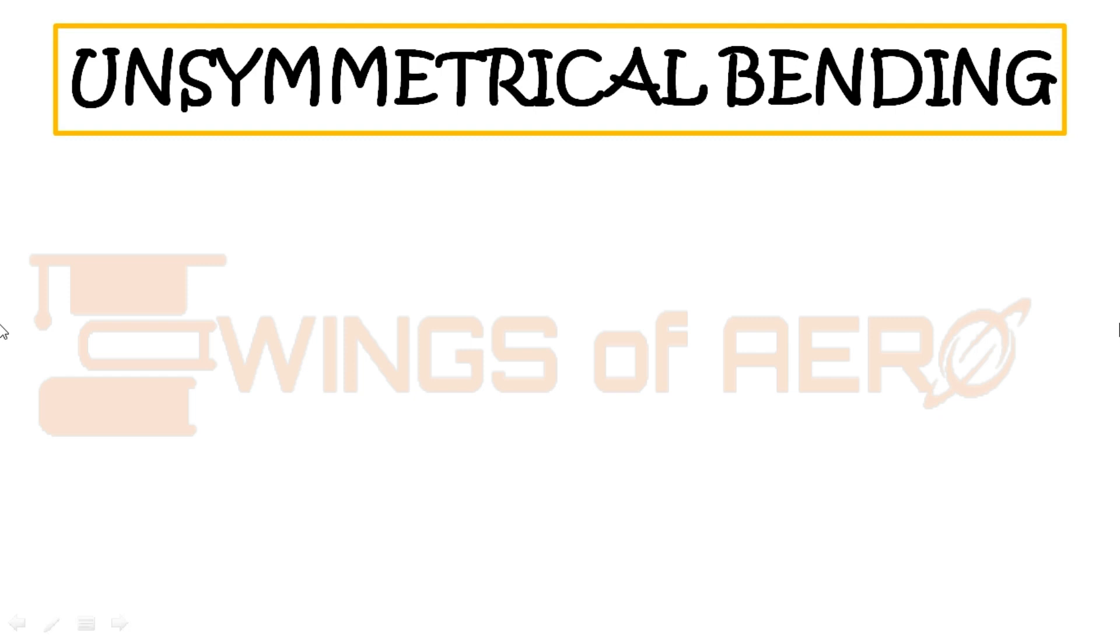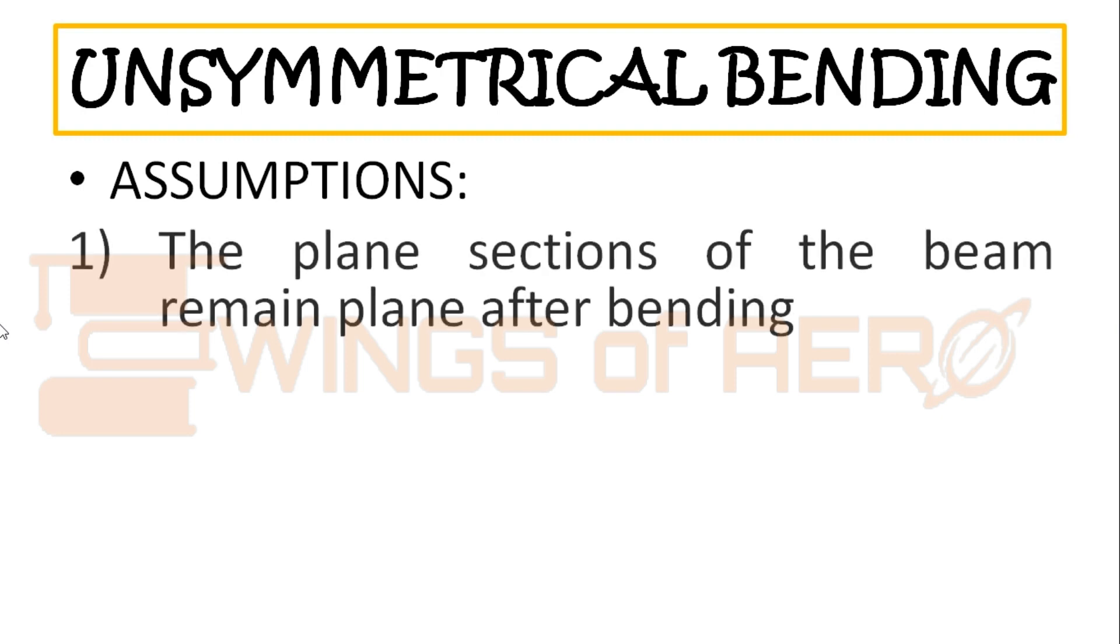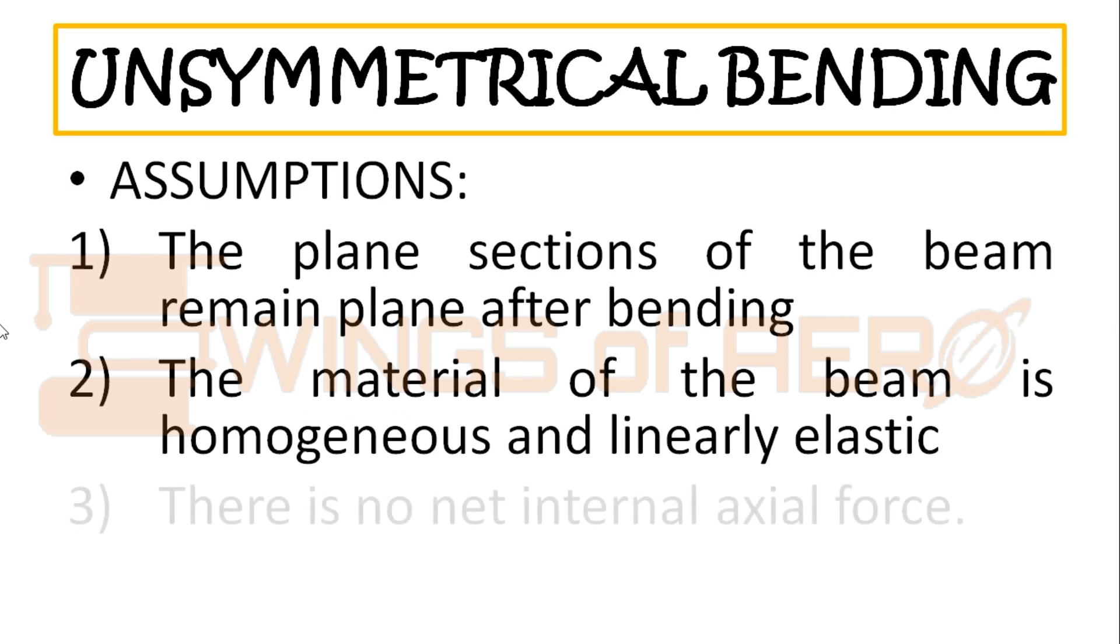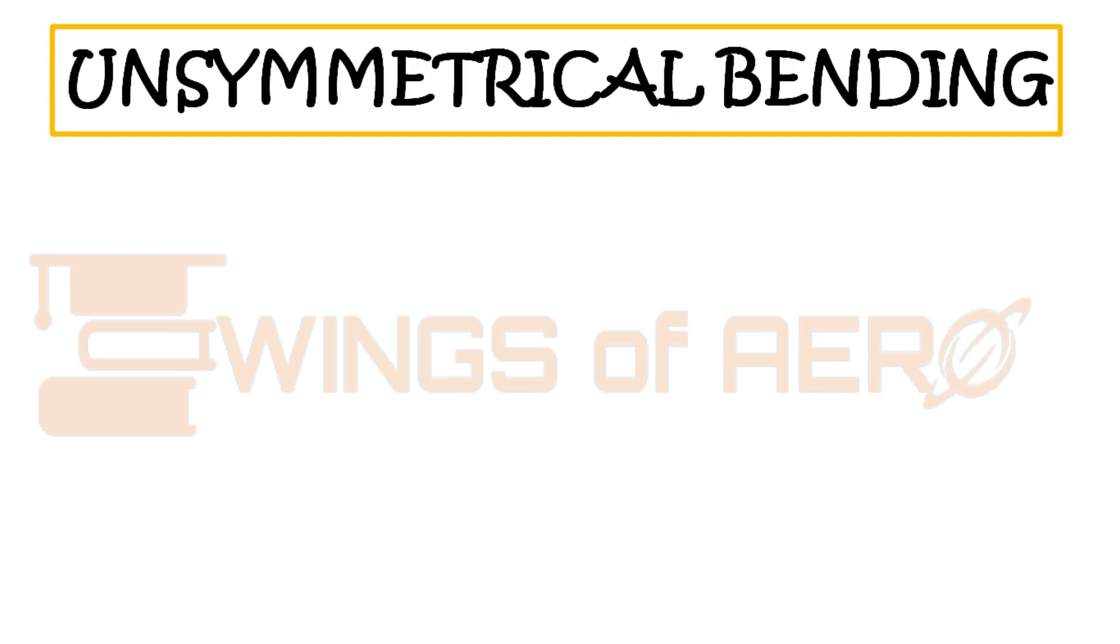Here comes unsymmetrical bending. What are the conditions for unsymmetrical bending? Before that, we have three important assumptions. First, the plane section of the beam remains plane after bending. Second, the material of the beam is homogeneous and linearly elastic. And third, there is no net internal axial force. What is meant by unsymmetric bending? It can act on two conditions. First, if the section is unsymmetric.